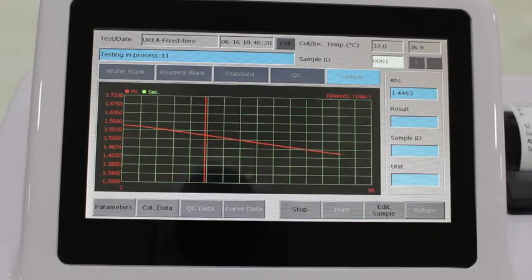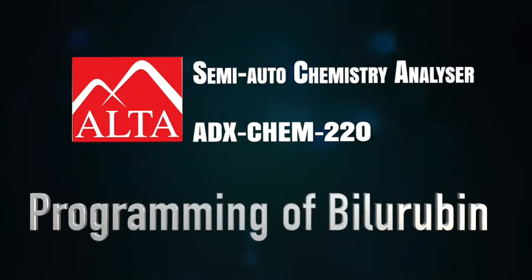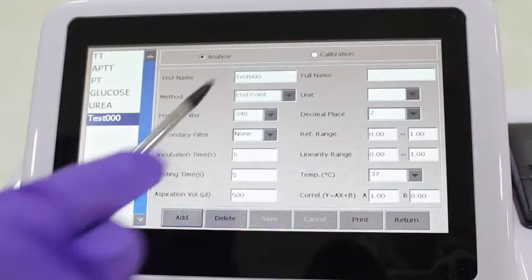Programming of bilirubin total—bilirubin total and direct is different as it is run in two-point end mode, or in some instruments indicated as a differential endpoint mode. Excess of bilirubin imparts color to the serum. To nullify the same, in bilirubin we generally run sample blank.